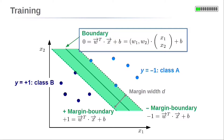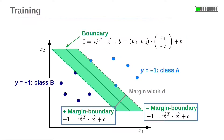We have the equation for the boundary: 0 equals the parameter vector w transpose times the input variable vector x plus b. Further, we have the two margin boundary equations: the plus margin boundary, plus 1 equals w transpose times x plus b, and the minus margin boundary equation, minus 1 equals w transpose times x plus b.